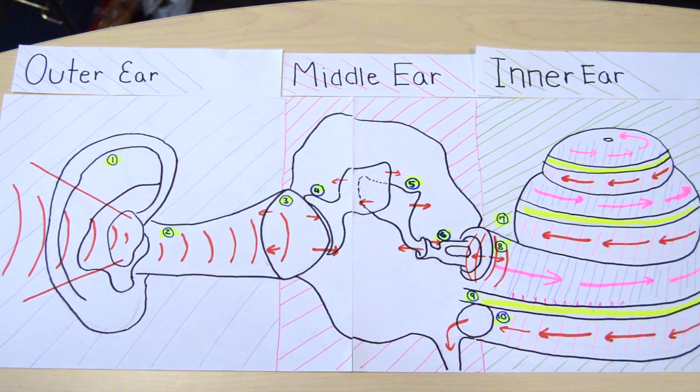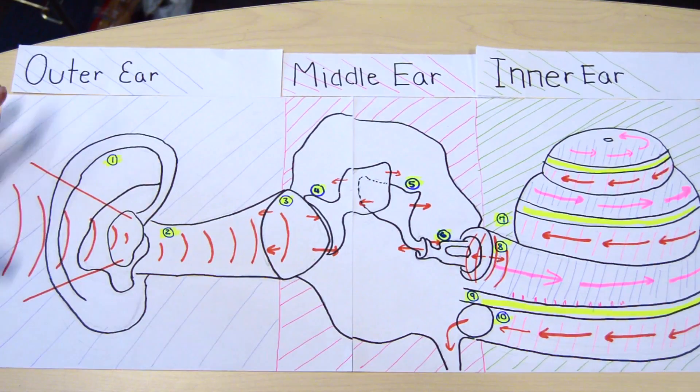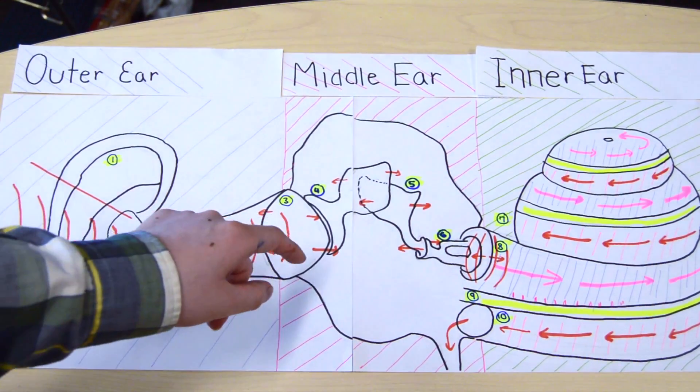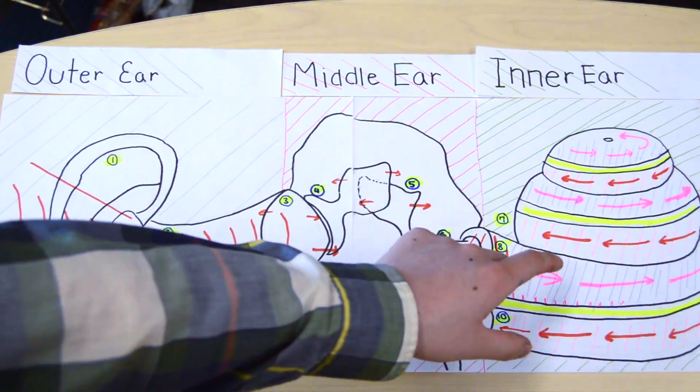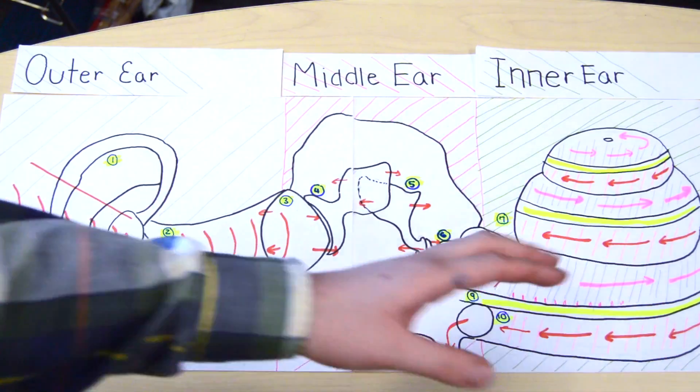We will be talking about the actual structure of the ear. The outer ear is highlighted in purple, the middle ear is highlighted in pink, and the inner ear is highlighted in green.